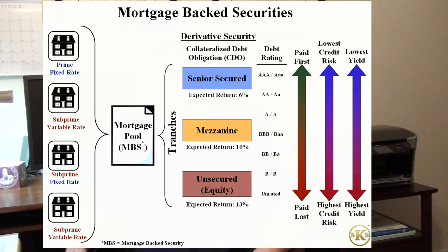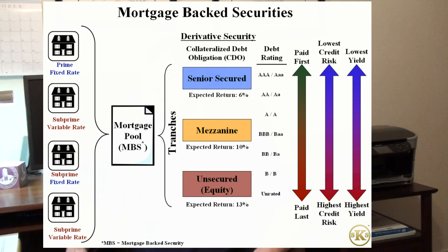This payment schedule and yield distribution creates a unique risk profile for each tranche. Independent agencies assign debt ratings to individual tranches. Therefore, it is possible to create a AAA senior secured offering from even the most lackluster mortgage pool through payment assignments and yield distribution.